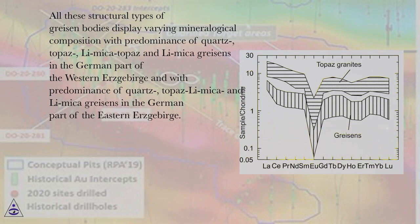All these structural types of greisen bodies display varying mineralogical composition with predominance of quartz, topaz, Li-mica-topaz and Li-mica greisens in the German part of the western Erzgebirge and with predominance of quartz, topaz-Li-mica and Li-mica greisens in the German part of the eastern Erzgebirge.